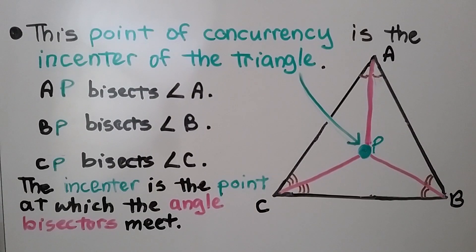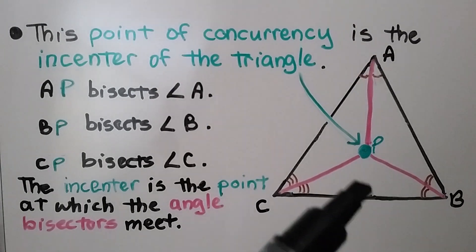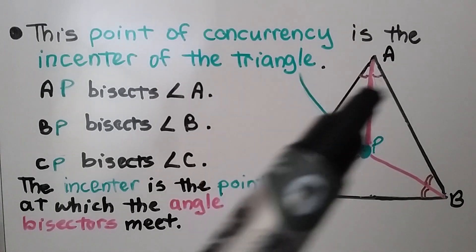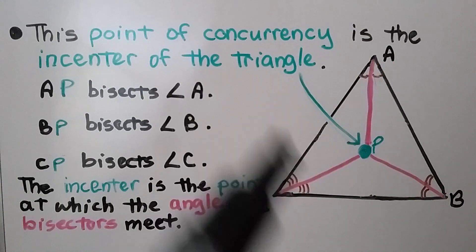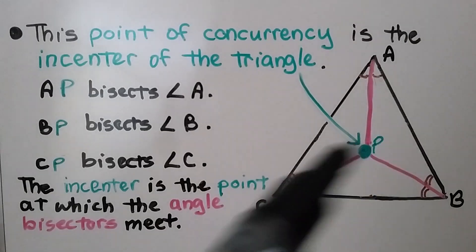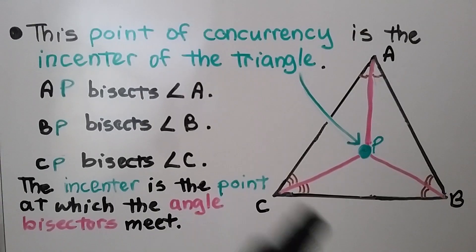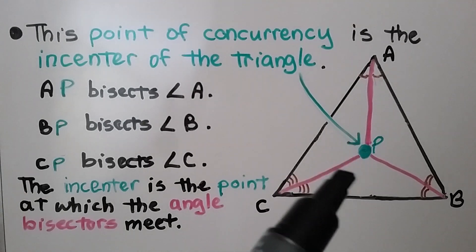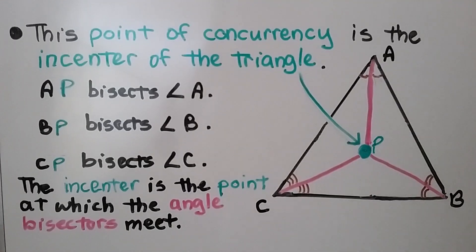This point of concurrency is the in-center of the triangle. AP bisects angle A, BP bisects angle B, and CP bisects angle C. The in-center is the point at which the angle bisectors meet — point P.